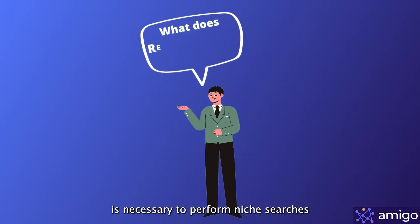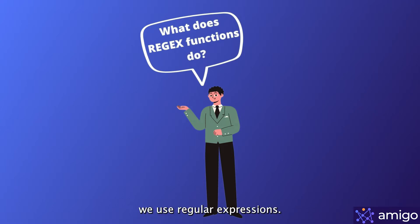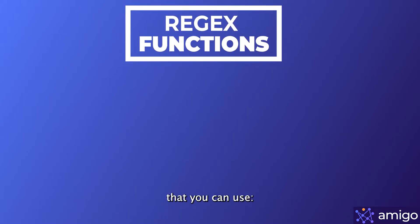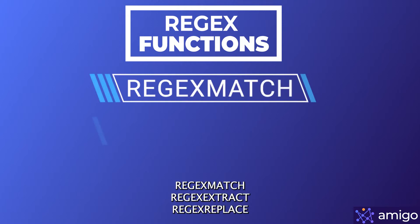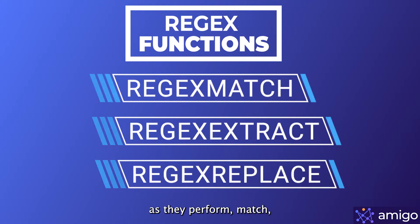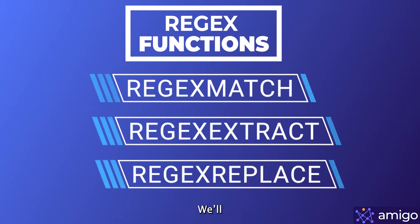Customized searching is necessary to perform niche searches while working on a lot of data. To achieve that, we use regular expressions. There are mainly three regex formulas in Google Sheets: REGEXMATCH, REGEXEXTRACT, and REGEXREPLACE. These names are self-explanatory as they perform match, extract, and replace respectively. You can check the regex rules and syntax in our blog post — I'll leave the link in the description.